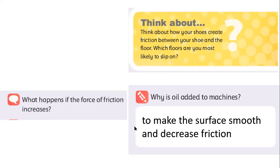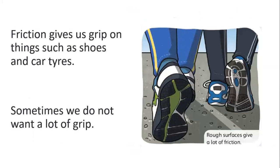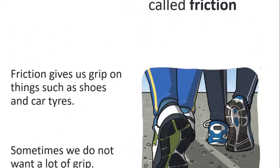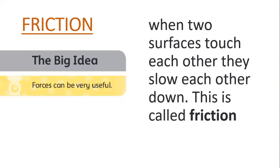What happens if the force of friction increases? Friction slows down the movement. If friction increases, movement will be slower. Some students came later, so I'll repeat one more time: the definition of friction is when two surfaces touch each other and slow down the movement.